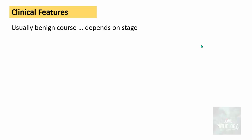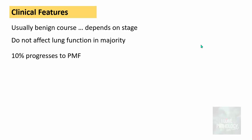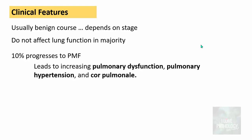Regarding clinical features, coal workers' pneumoconiosis usually has a benign course and the features depend on the stage. It does not affect lung function in the majority of cases, but in 10 percent of cases it progresses to progressive massive fibrosis, leading to increasing pulmonary dysfunction, pulmonary hypertension, and cor pulmonale.